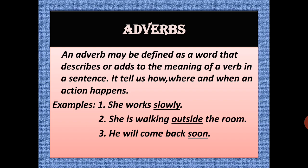Let us see the examples. 'She works slowly.' She works — but how does she work? Slowly. So 'slowly' is an adverb. 'She is walking outside the room.' Walking is happening — but where? Outside. So 'outside' is also an adverb. 'He will come back soon.' Come back — but when? Soon. So the words that tell us how, where, and when of the action are called adverbs.